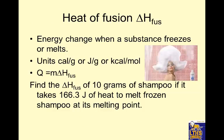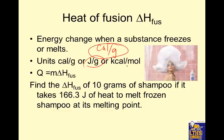Heat of fusion is the heat it takes to freeze or melt something. Heat of fusion is going to be given in calories per gram, because we want to compare all things — how much heat it takes to melt one gram of a substance at its melting point, or how much heat it takes to freeze one gram at its freezing point. Heat of fusion has to be calories per gram, joules per gram, or we could even do kilocalories per mole.